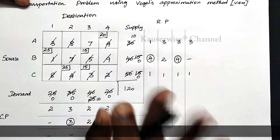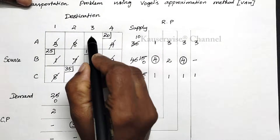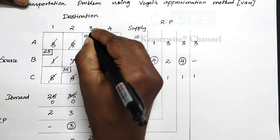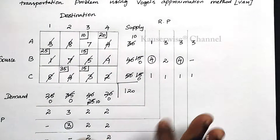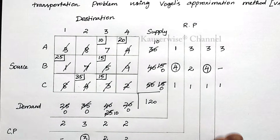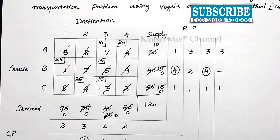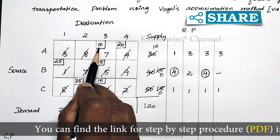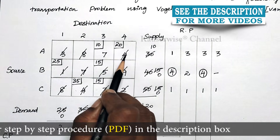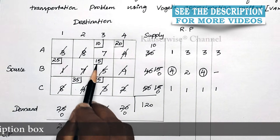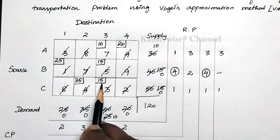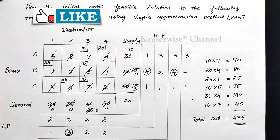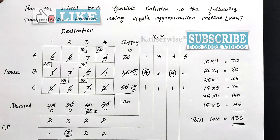Finally, we have only one cell left. Simply compare demand and supply — both are equal at 10, so allocate 10. The entire demand and supply is now allocated. Now find the total transportation cost by multiplying cost with allocated value: 10×7 + 20×4 + 25×1 + 15×5 + 35×4 + 15×3 = 435. This is the initial basic feasible solution according to the VAM method.